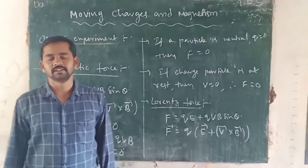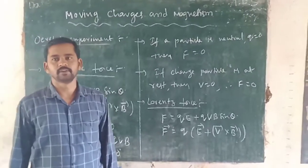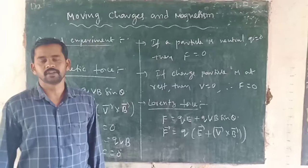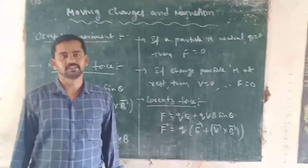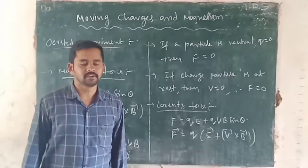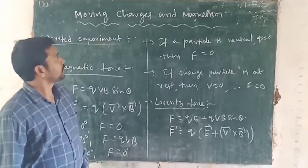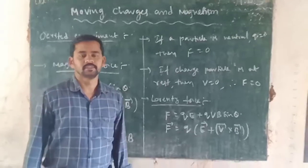In current electricity, where the charges are moving, whenever the charges are flowing through the conductor, the current concept we discussed in the last chapter. Now, another topic: moving charges and magnetism.